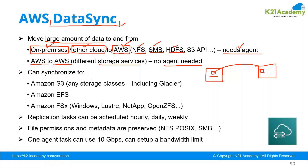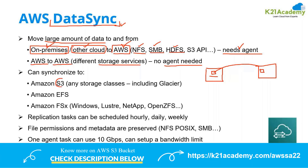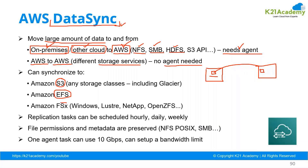When you are migrating, you can move the data to the S3 bucket. You can move the data into EFS — Elastic File System — or you can move the data into FSX. FSX can be of any type: it could be FSX for Windows, FSX for Lustre, FSX for NetApp ONTAP, or FSX for OpenZFS. Any type of FSX is supported, so you can bring the data into any of these services.